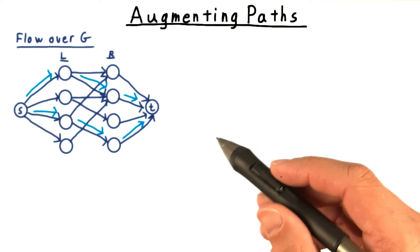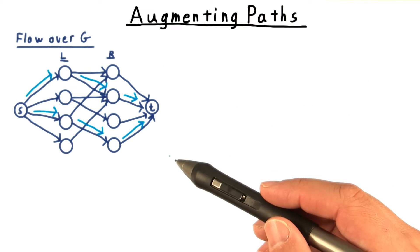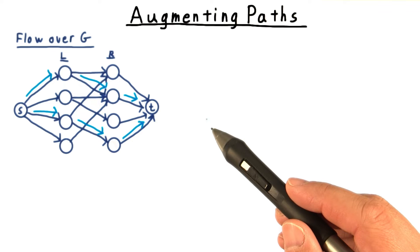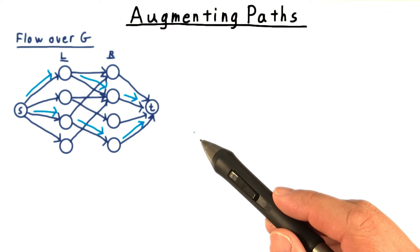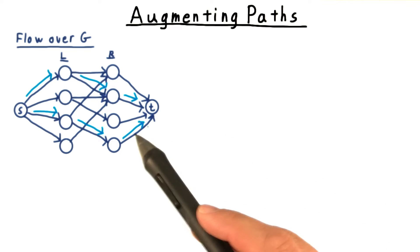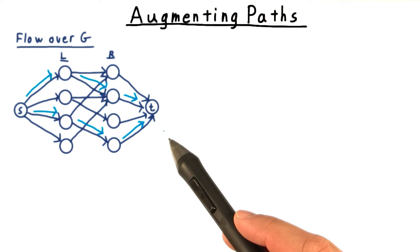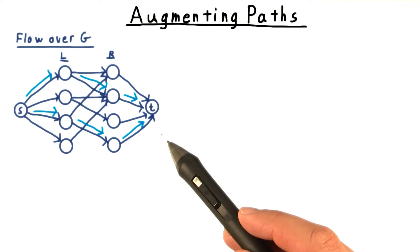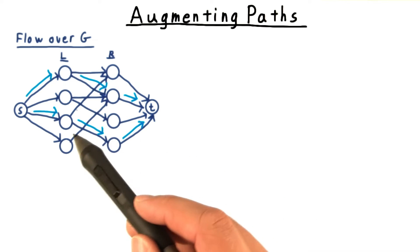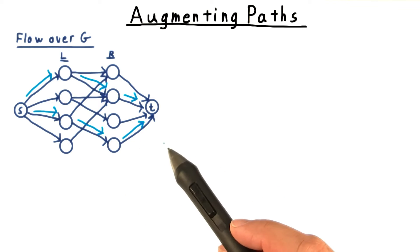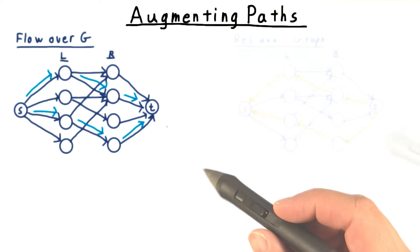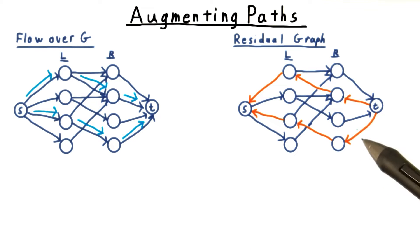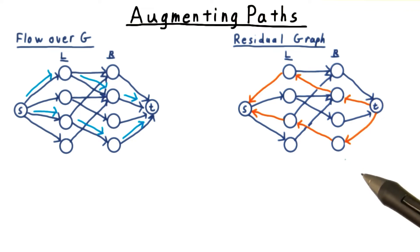In a network that arises from a bipartite matching problem, there are a few special phenomena that are worth noting. First, observe that all intermediate flows found by Ford-Fulkerson correspond to matchings as well. If there's flow across an internal edge, then it belongs in the matching. Also, because flows along edges are either zero or one, there are no anti-parallel edges in the residual network.